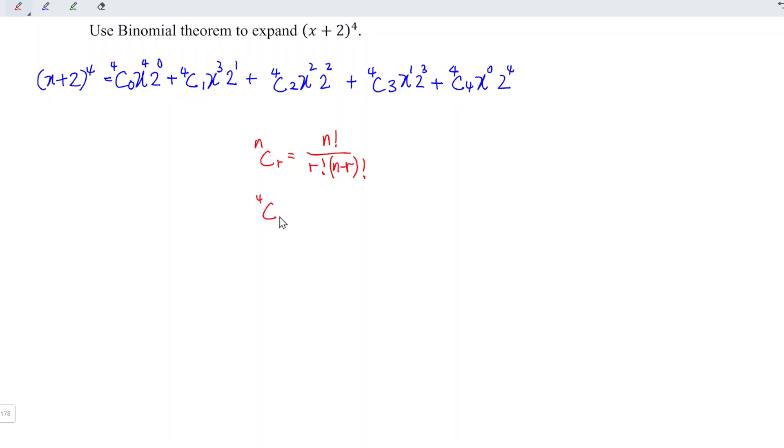Which means that if we have 4C0, this is equal to 4 factorial divided by 0 factorial times 4 minus 0 factorial which is equal to 1. If we have 4C1 which means that we have 4 factorial divided by 1 factorial times 4 minus 1 which is 3 factorial.